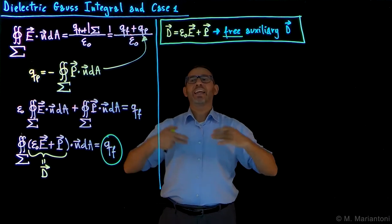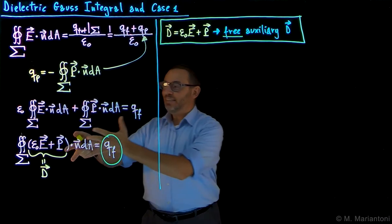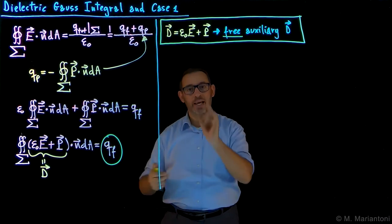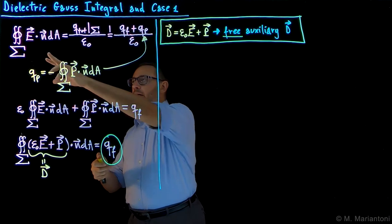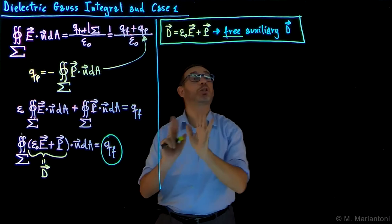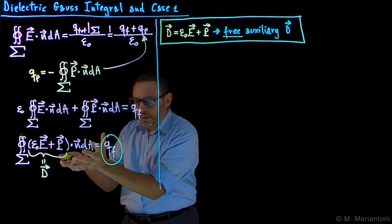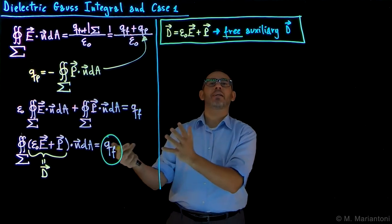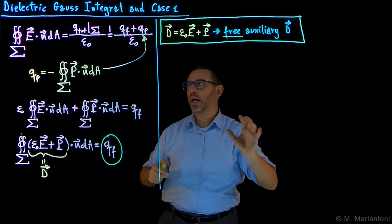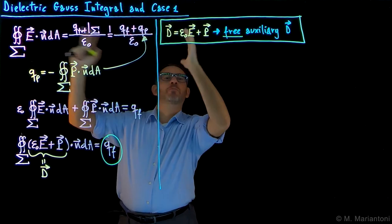Note the difference from the flux of E: for E we have total charge over ε₀; for D the flux of D is simply Qf — no division by ε₀. This is the integral form of Maxwell's equations for D, and it is equivalent to the original Gauss's theorem, sufficient to describe all possible electrostatic phenomena.